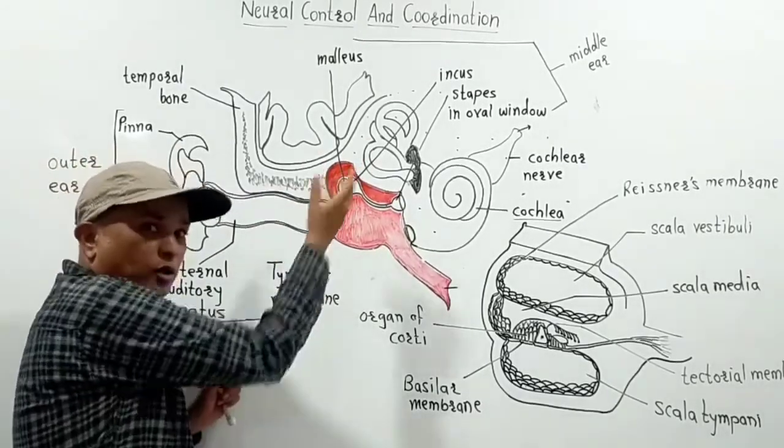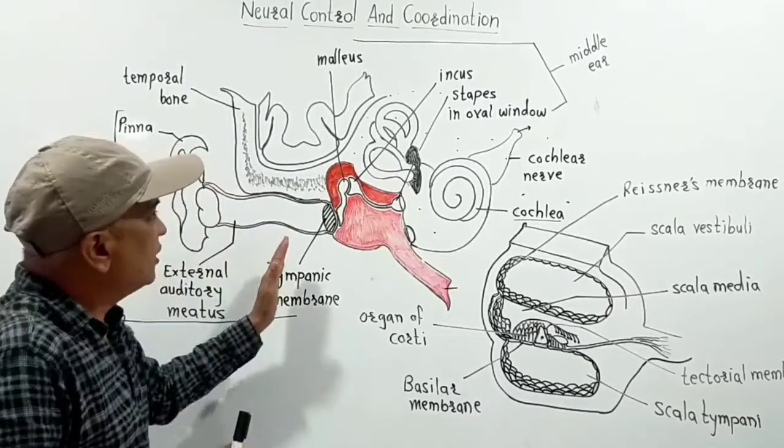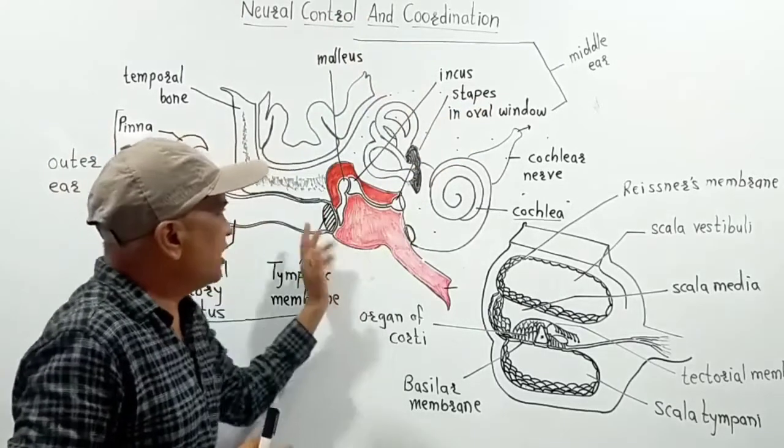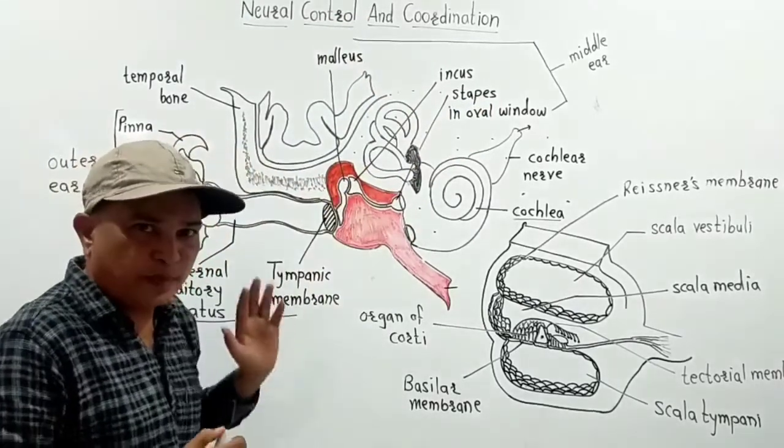These vibrations are received by ear ossicles and these vibrations are transmitted from malleus to incus to stapes. These bones are vibrations.